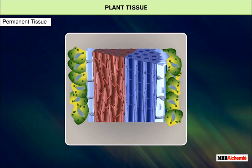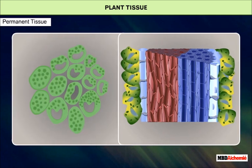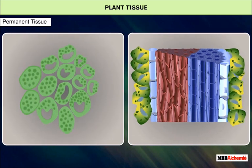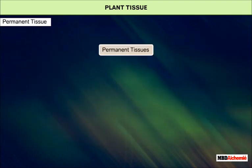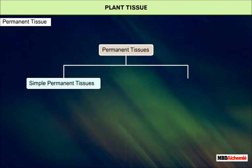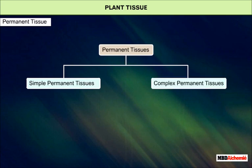The cells of permanent tissue originate from meristematic tissue. However, they take up a specific role and lose the ability to divide. There are two types of permanent tissues: simple permanent tissues and complex permanent tissues.